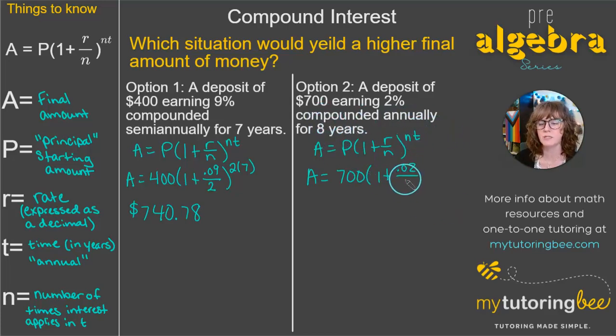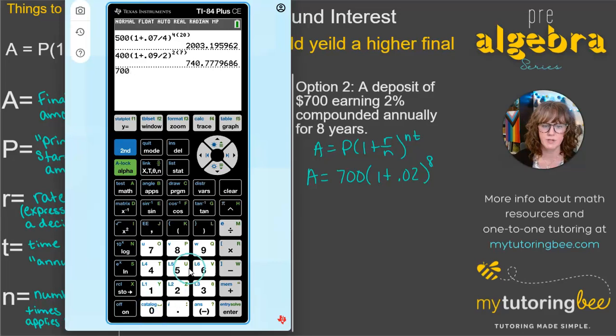Now, this one is compounded annually, so I could put this over 1. However, if something is compounded annually, you can leave out the N out of these equations. So I'm going to go ahead and just put 0.02 there raised to the 8 power. So it just simplifies it a little bit for us. And then let's calculate this. So we've got 700 times 1 plus 0.02, and that is all raised to the 8 power. Let's see what we get. We get $820.16.